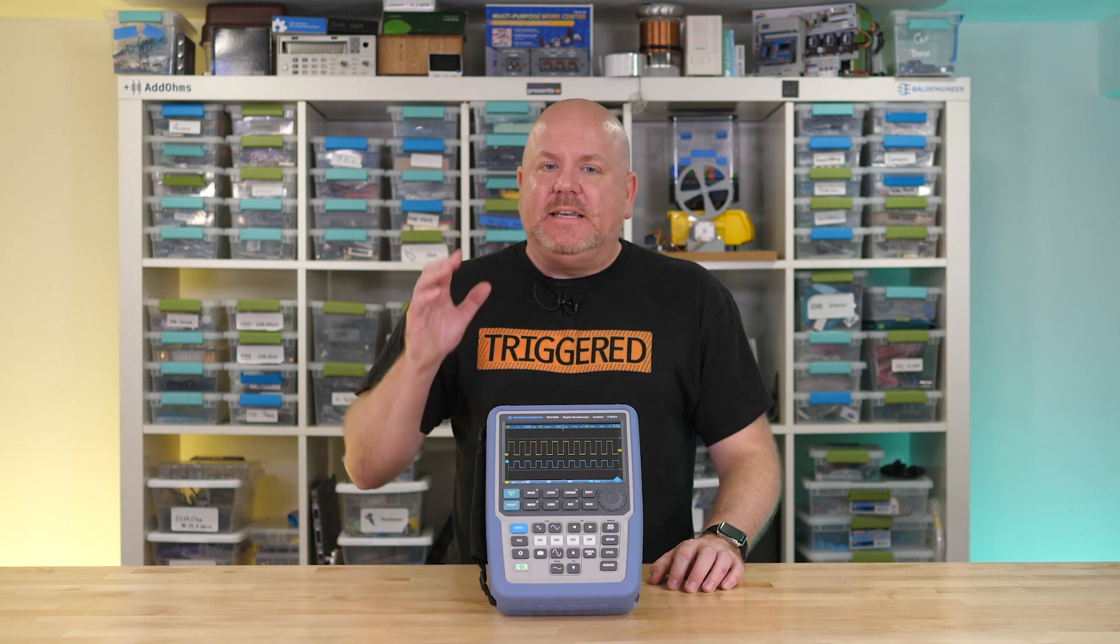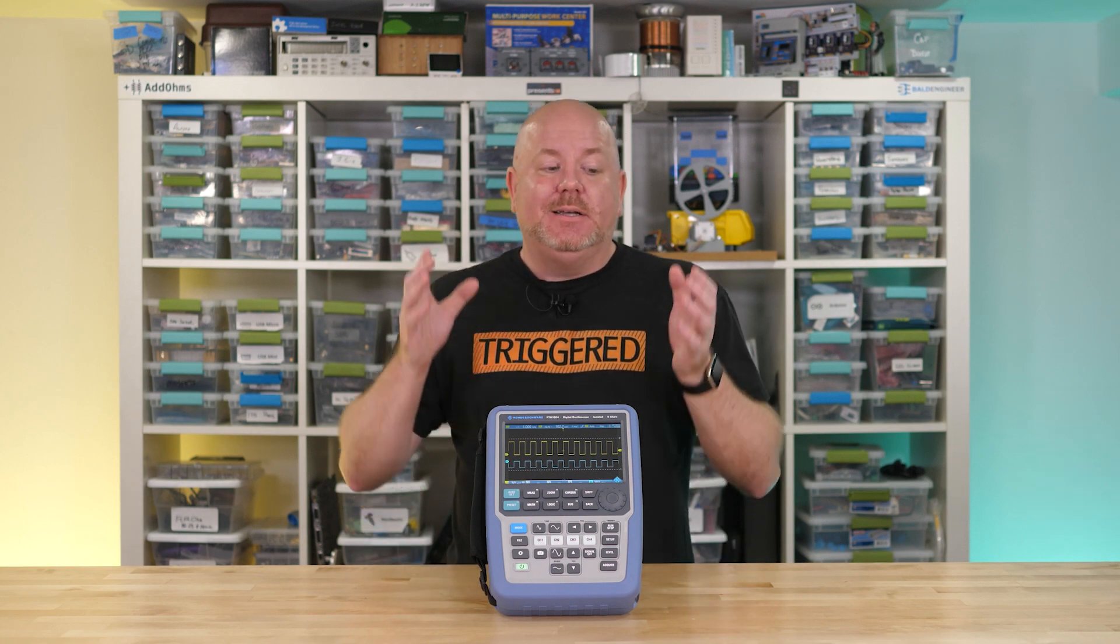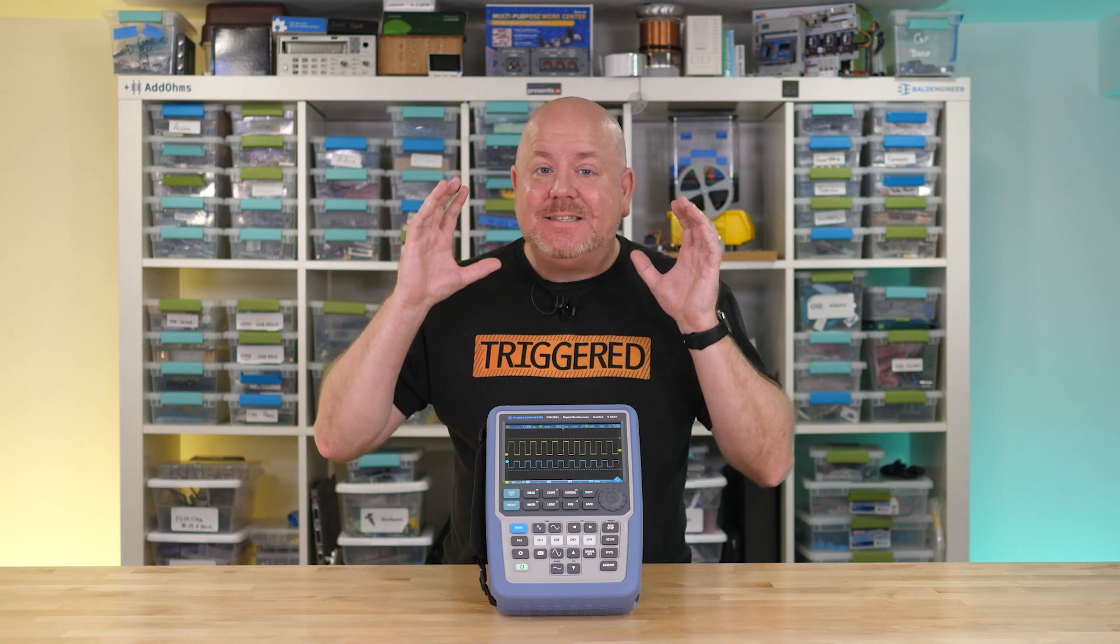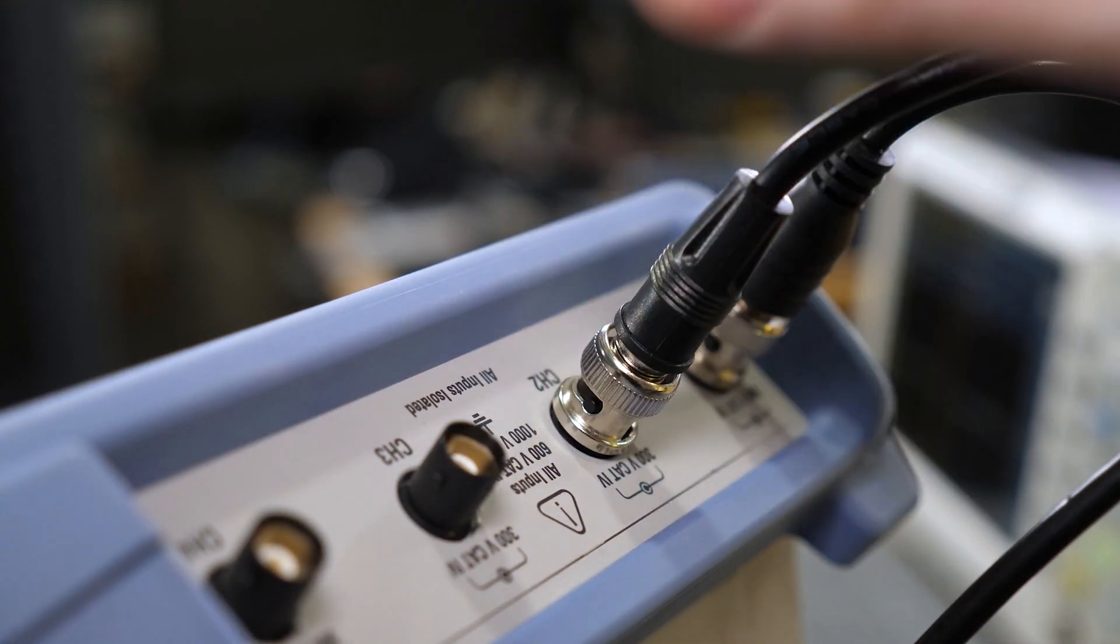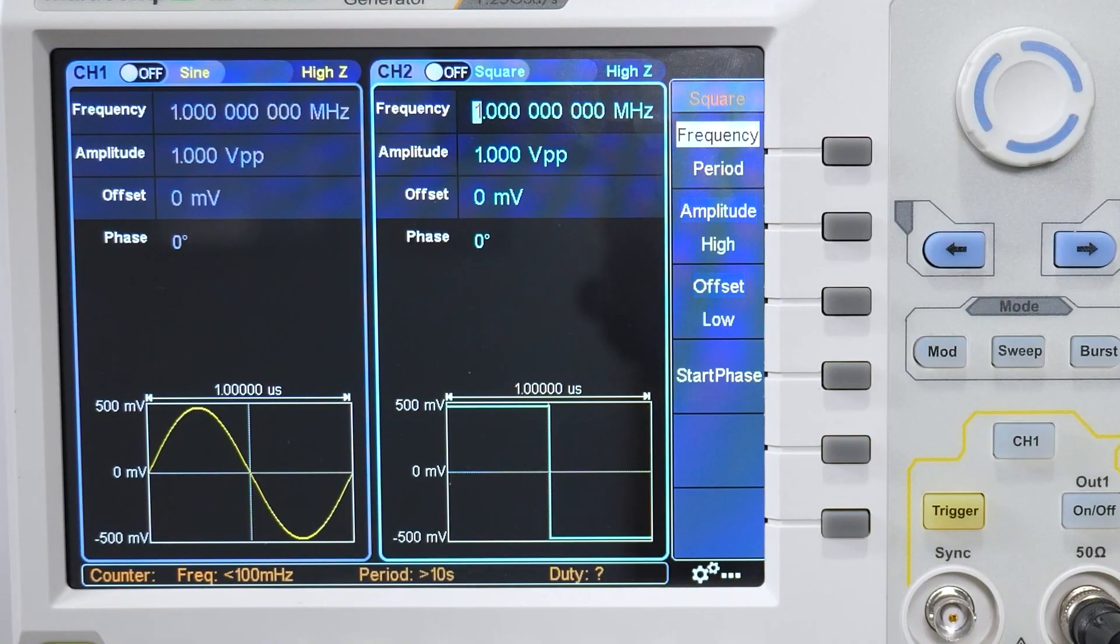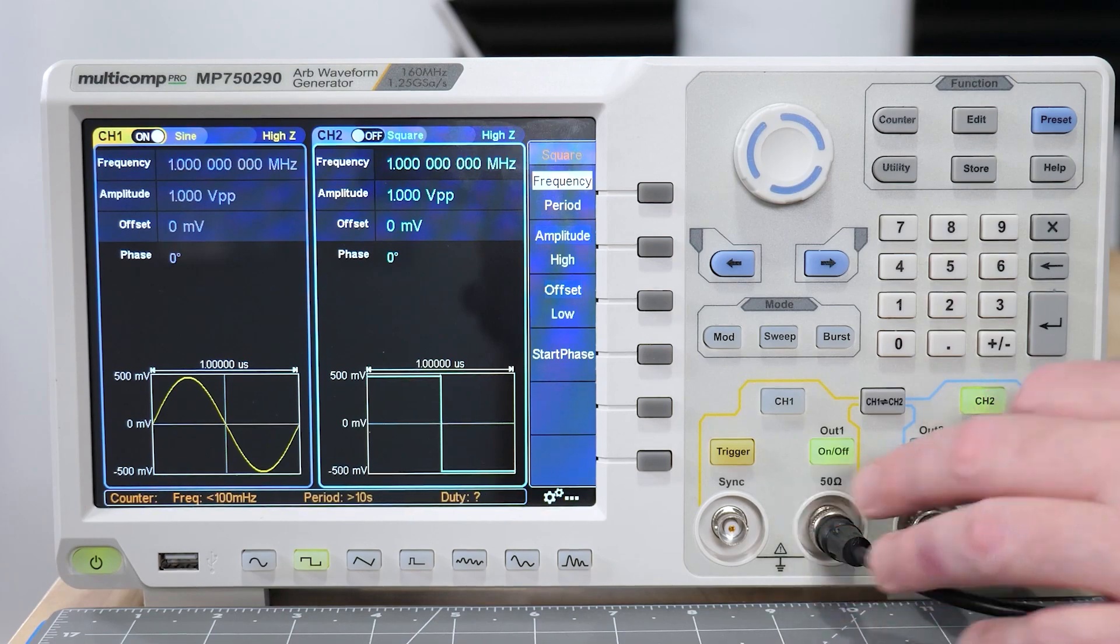One reason bandwidth is a difficult spec to consider is because the amount you need depends entirely on the type of signal you are looking at. For example, using an arbitrary waveform generator, let's compare the difference of a 1 MHz sine and square wave, each with a voltage of 1 volt peak-to-peak.